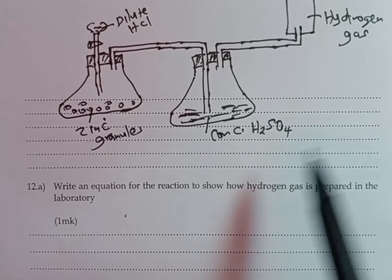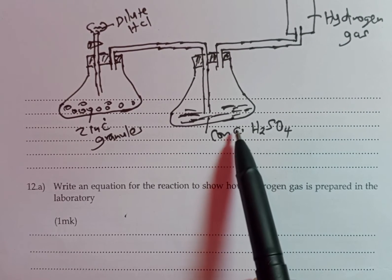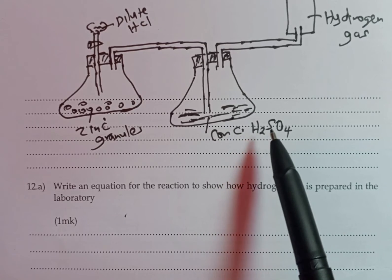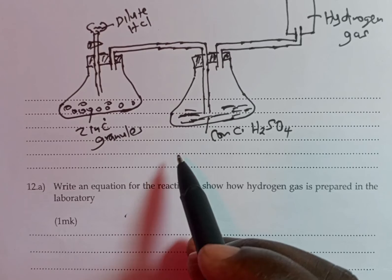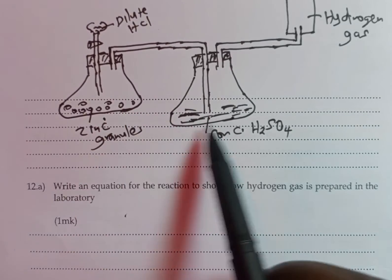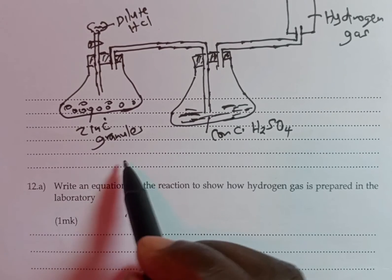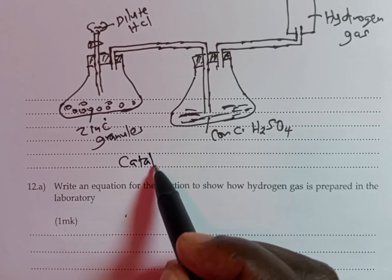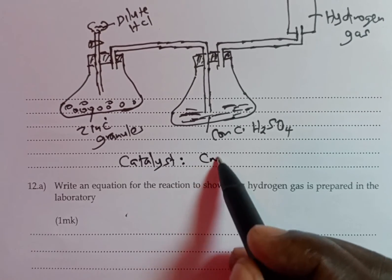We can also use a catalyst to speed up the rate at which the gas is produced. The catalyst used in this case is crystals of copper sulfate.